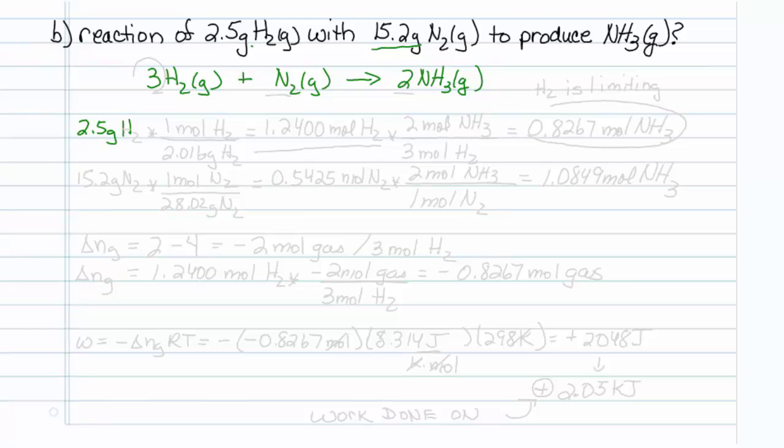2.5 grams of hydrogen, and we know that there is one mole of hydrogen for every 2.016 grams of hydrogen, so this will give us 1.2400 moles of hydrogen.